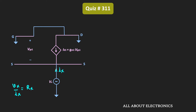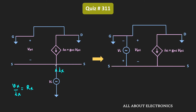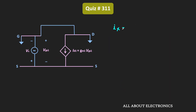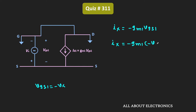This test voltage is applied between the source and the ground terminal, or effectively between the source and the gate terminal. That means voltage Vx is equal to minus Vgs1, and the current is equal to Ix. Applying KCL at this node: Ix plus Id1 equals zero, so Ix equals minus Gm1 times Vgs1. Since Vgs1 equals minus Vx, we get Ix equals minus Gm1 times minus Vx, which gives Ix equals Gm1 times Vx.